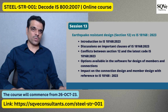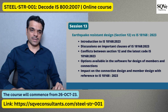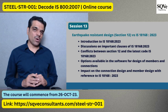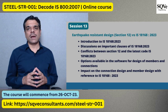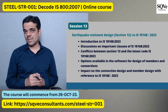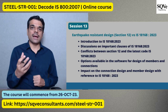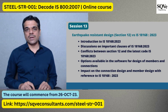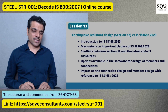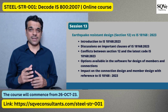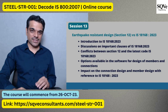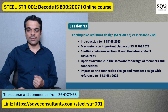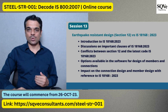The next session continues earthquake resistant design, focusing on IS 18168:2023 — the recently released document. We will touch upon its important clauses, highlight conflicts between Section 12 of IS 800:2007 and IS 18168, and note that IS 18168 takes precedence in case of conflict. We will also explore what options are currently available in StaadPro, ETABS, and RAM Connection regarding earthquake resistant design per Section 12, NBC 2016, and IS 18168:2023.